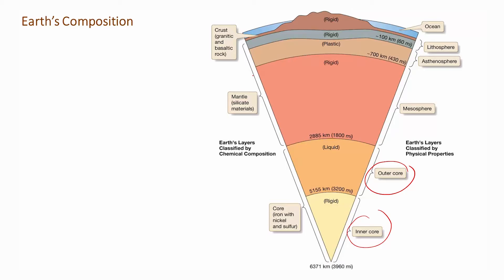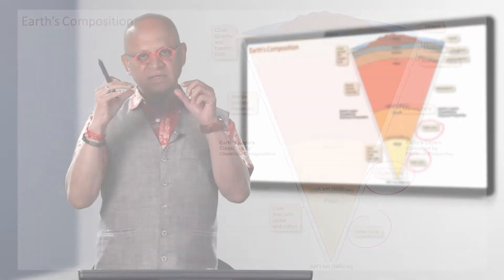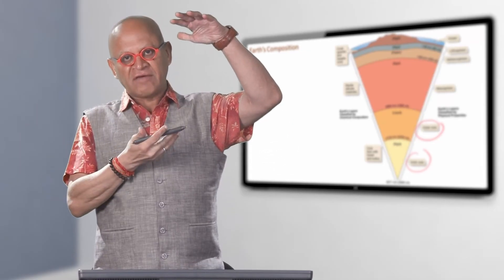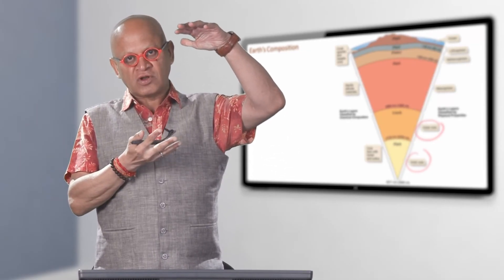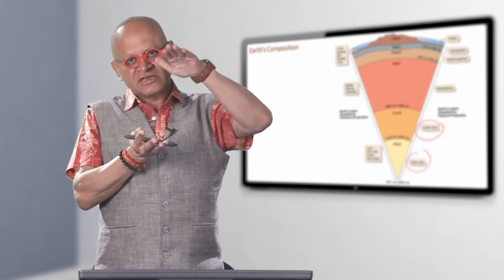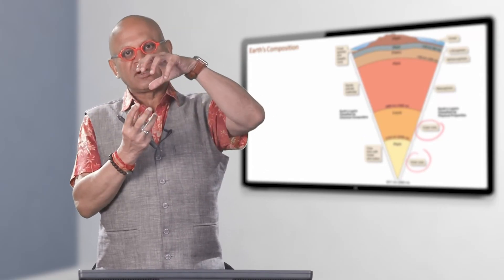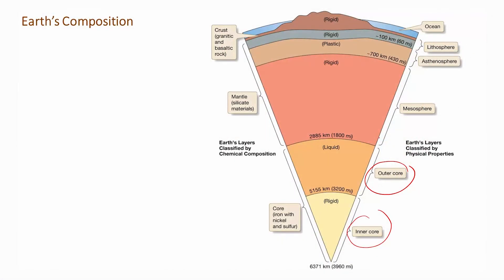Above that is the mantle which is mainly made up of silicate materials, and on top of that is sitting the so-called crust which is divided into the oceanic crust and the continental or terrestrial crust. Because the oceanic crust is under water several kilometers, on average 3 kilometers, and water is heavy, the oceanic crust is compressed, it is denser, darker, whereas the continental crust is lighter in density and also lighter in color.